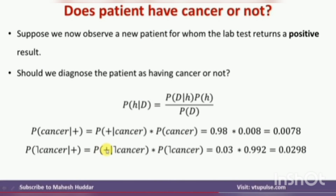Considering which probability value is greater: suppose we observe a new patient for which the lab test returns a positive result — should we diagnose the patient as having cancer or not? P of H given D equals P of D given H times P of H divided by P of D. The probability of cancer given a positive report equals P of positive given cancer times P of having cancer, which equals 0.03 times 0.992, giving 0.02976.